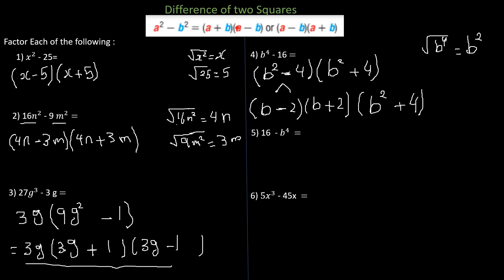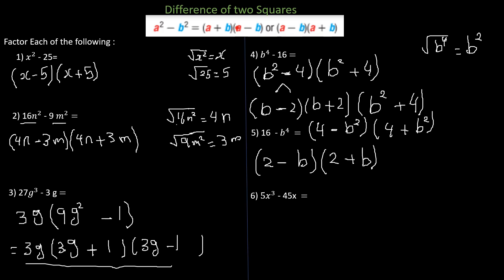Example five is the same idea but written as 16 minus b to the power of 4. This is equivalent: 16 becomes 4 squared and b to the fourth stays. Applying the difference of two squares gives 4 minus b squared times 4 plus b squared. Then 4 minus b squared factors further as 2 minus b times 2 plus b, while 4 plus b squared remains unfactored.